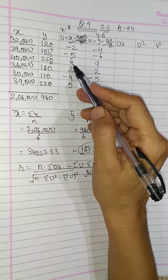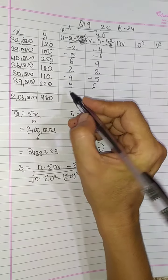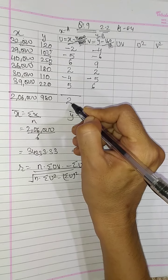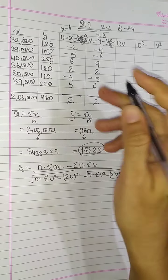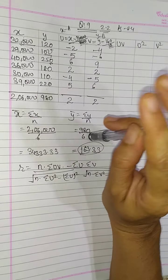So minus 2, minus 5, 6, 2, minus 4 and 5. Total will be 2. For v column: minus 4, minus 6, 9, 2, minus 5 and 6. Total will be 2. You can do the rest, so easy.